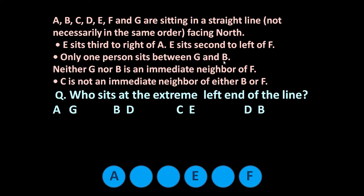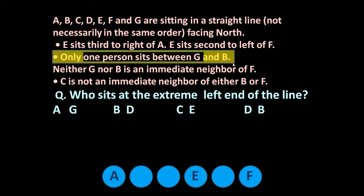Only one person sits between B and G. But here it is not clear what position will be occupied by G and B, so let us underline this statement and consider it afterwards after getting some more information.